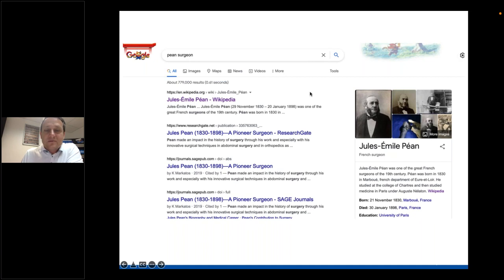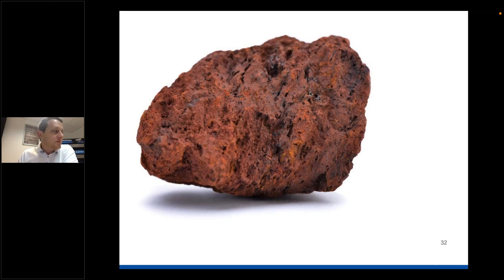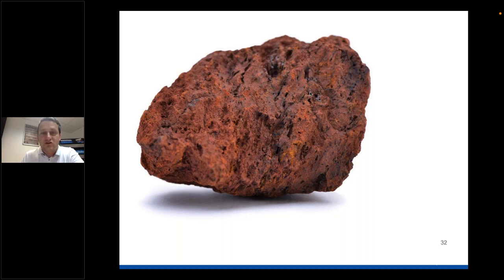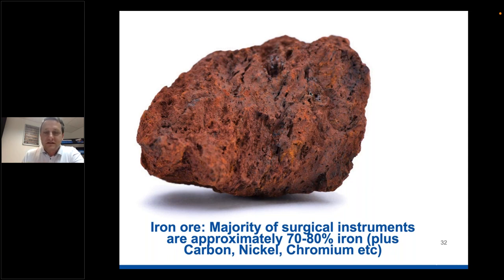Let's look at understanding material selection and how we start to create surgical instruments. Here I have a picture of iron ore - actually a lump extracted from the ground. Iron ore is relevant because iron extracted from it makes up the majority of a surgical instrument's composition: around 70 to 80 percent. The instrument would also contain other elements such as carbon, nickel, and chromium, but iron is the basis of it. Iron oxide is iron in its most stable state - something we must pay attention to.